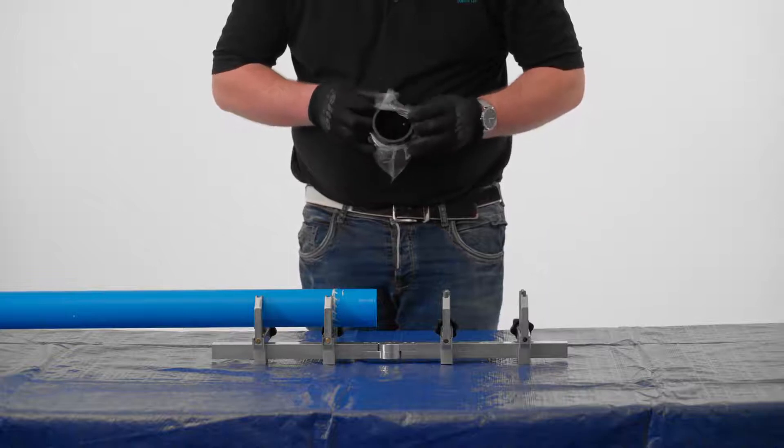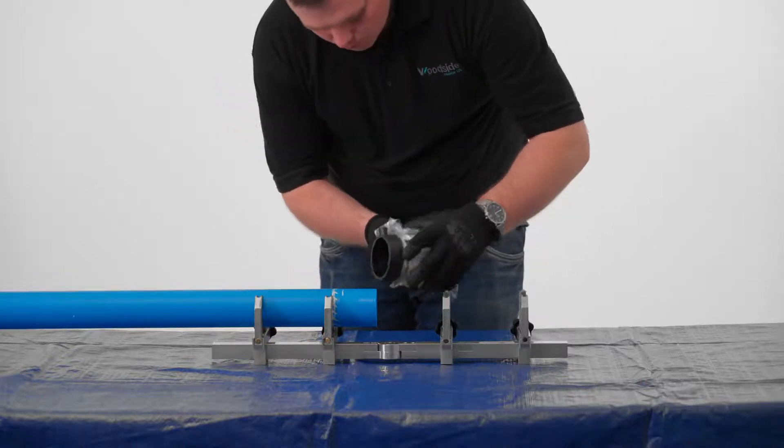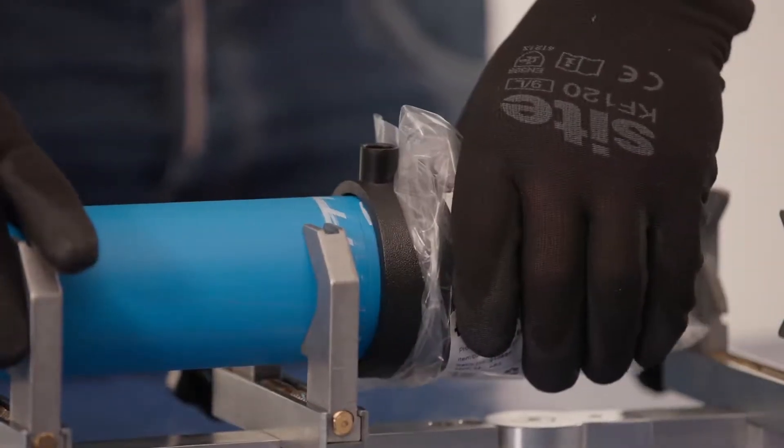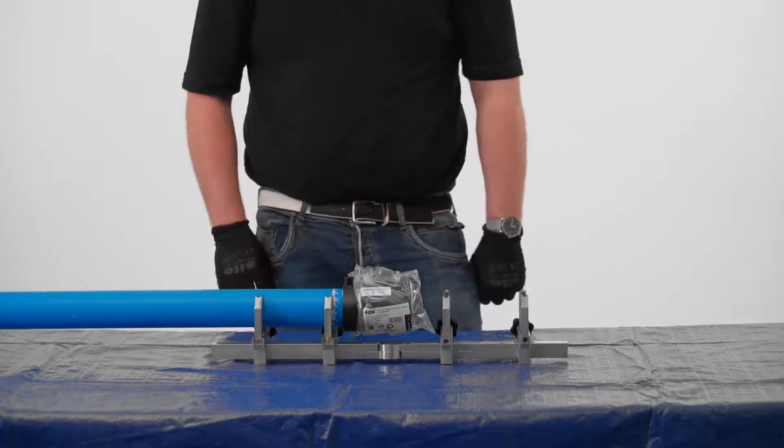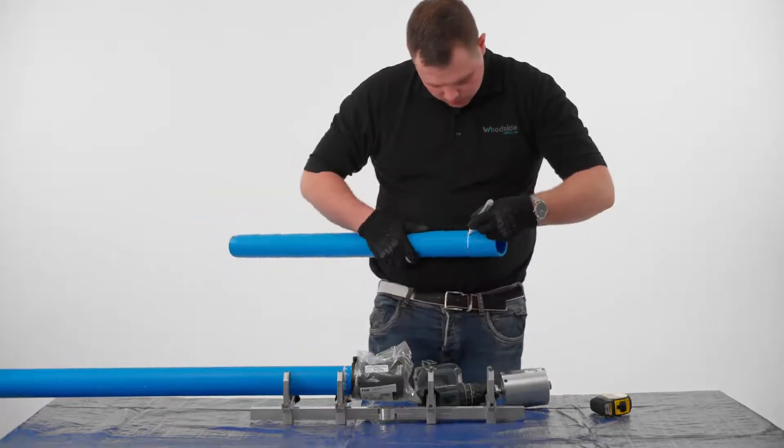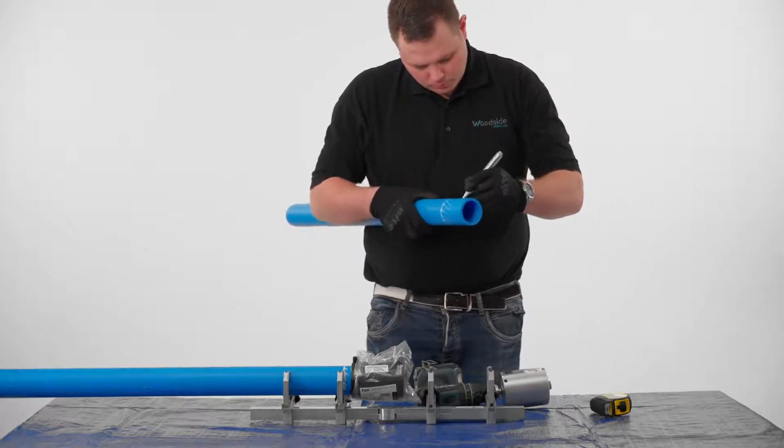Keep the fitting inside the bag and place over the prepared pipe end, ensuring that the pipe is inserted to the center stop depth mark applied earlier. Do not attempt to weld without fully inserting the pipe. The bag can be left over the open end of the fitting to give temporary protection.